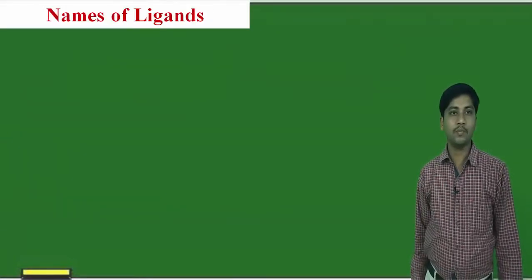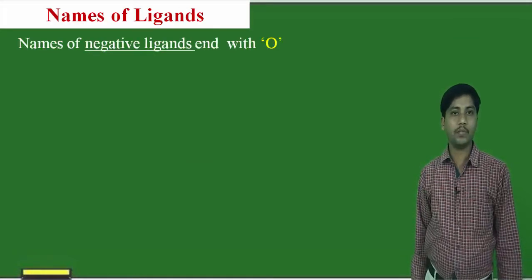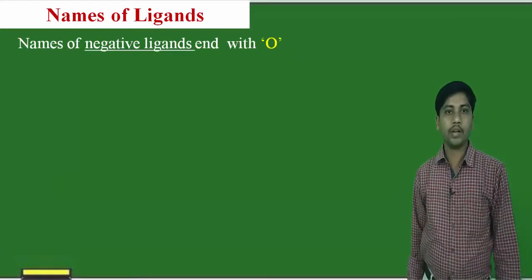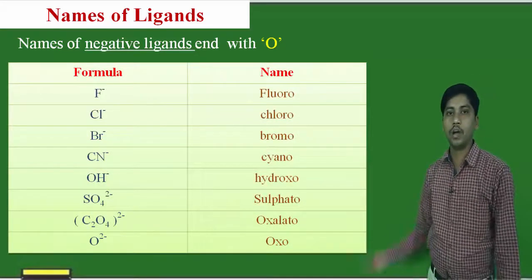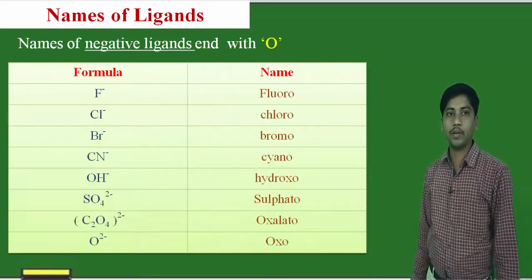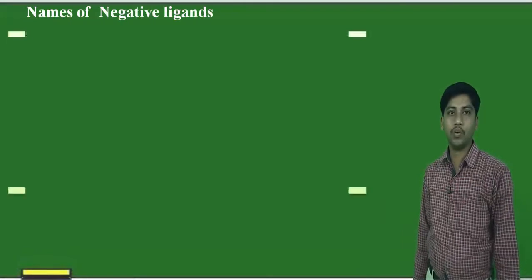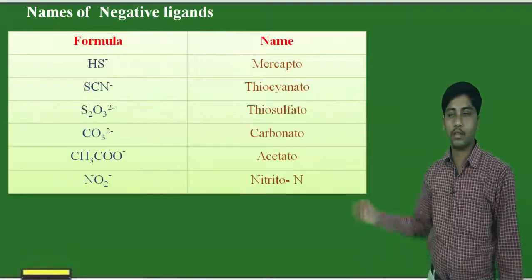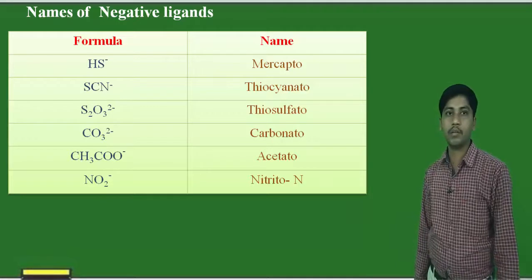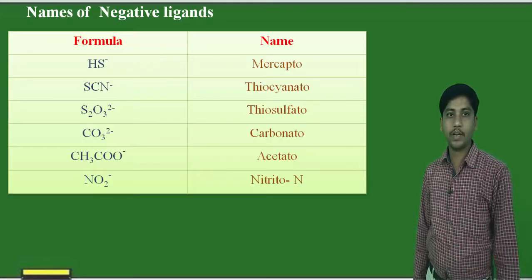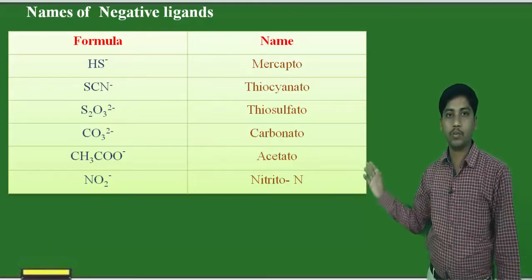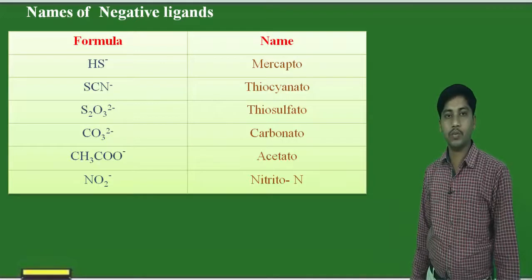Now we will see how to give names to the ligands. First, if the ligands are negative, their name ends with 'o'. For example: fluoro, chloro, bromo, and others such as mercapto, thiocyanato, thiosulfato, carbonato, acetato, and nitrito. These are the negative ligands whose names end with 'o'.